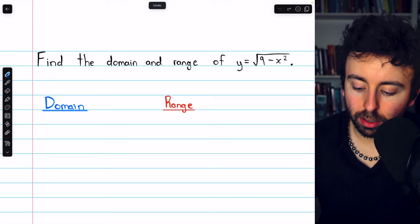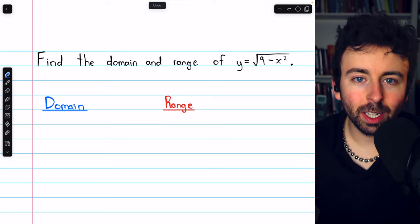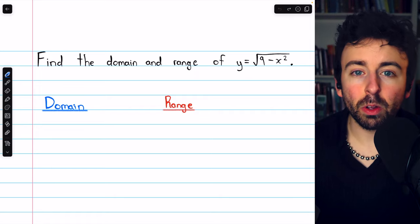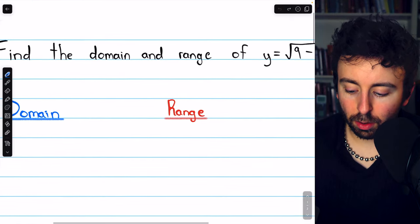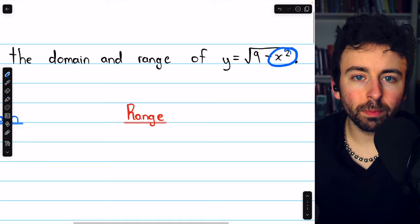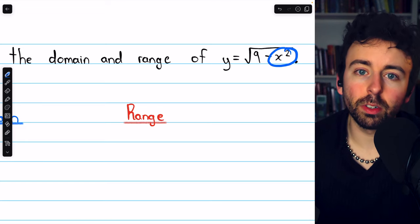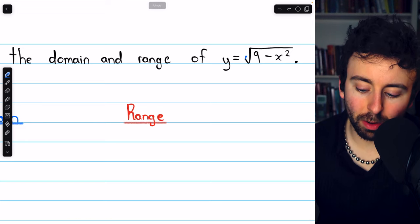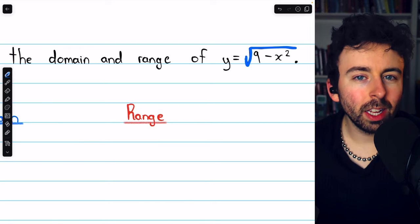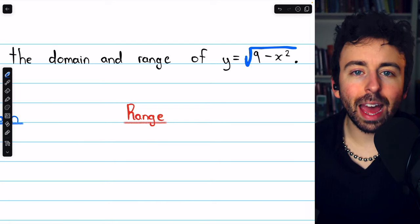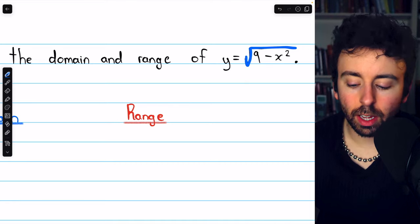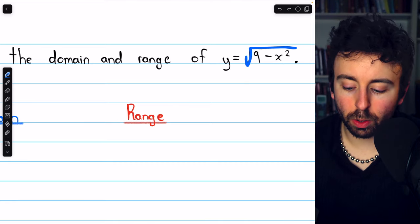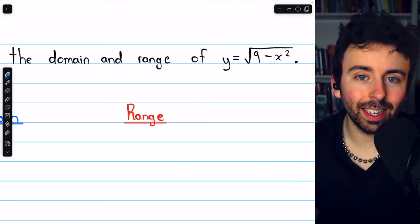For example, subtraction is in this function. You can subtract any two numbers you like, so there are no restrictions there. There's also a number being squared. You can square whatever you like, so there's no restrictions there, but there's also a square root. We can't take the square root of a negative, so that imposes a restriction. What's inside the square root has to be non-negative.